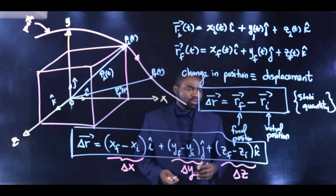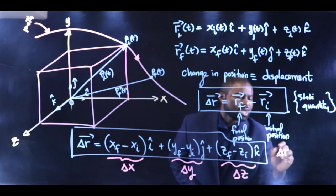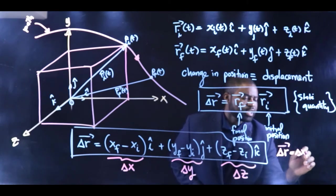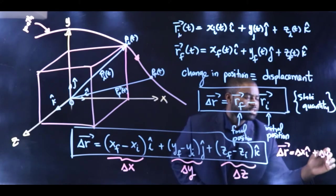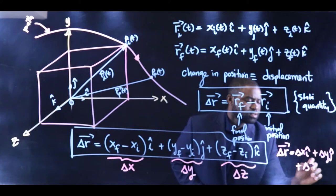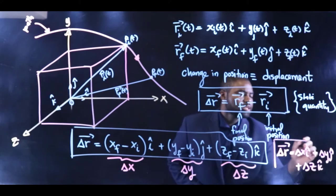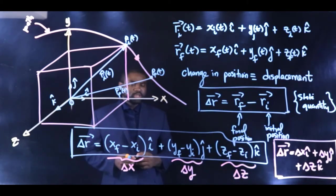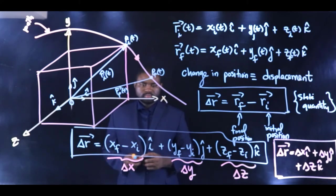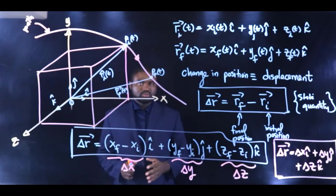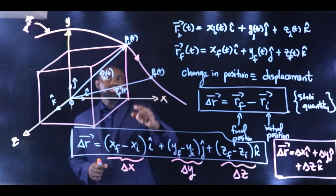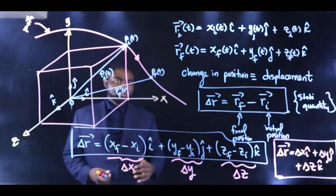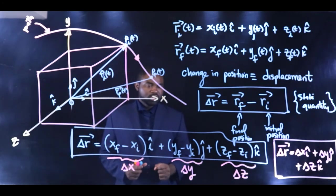That would imply that ΔR simply is ΔXI + ΔYJ + ΔZK. This is another way of representing the displacement of the particle. Bear with me that displacement is a vector, because the displacement of a particle is the change in position in a particular direction, which means that the displacement of this particle has both a magnitude and a direction.